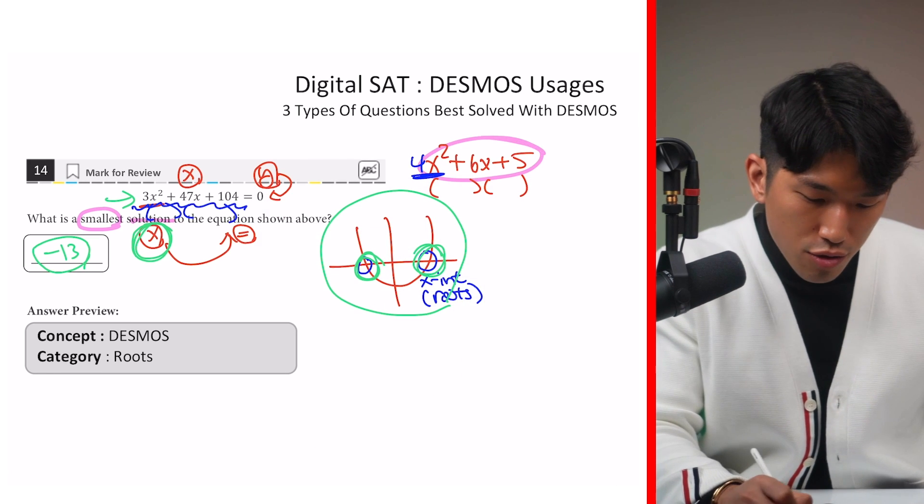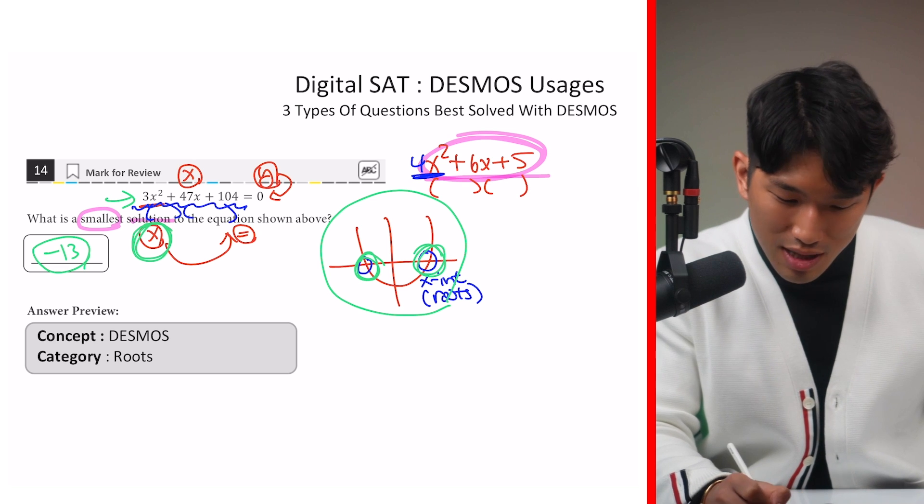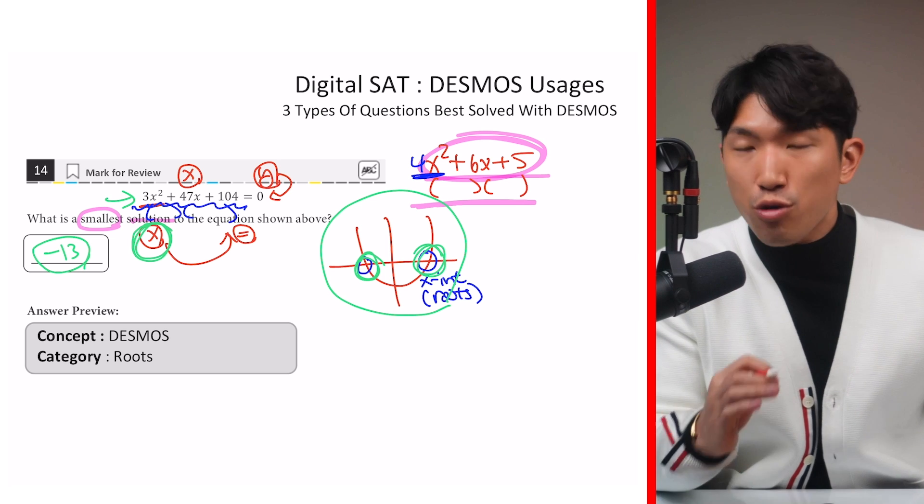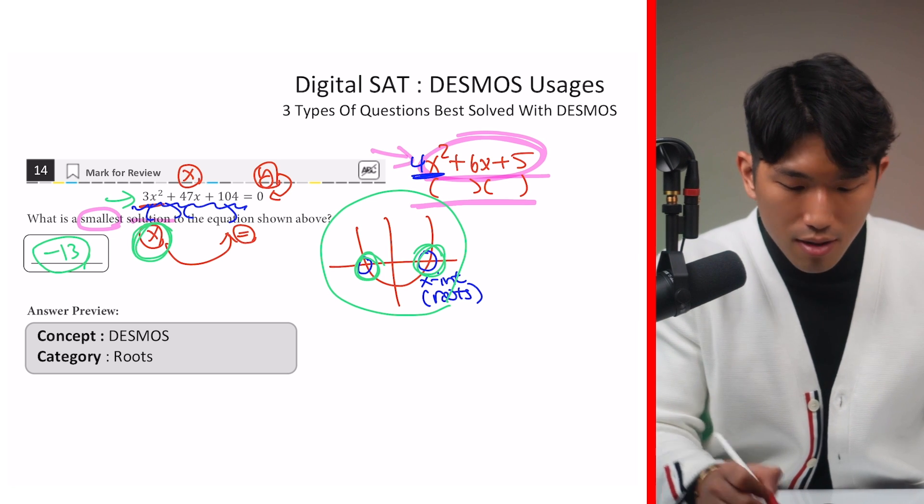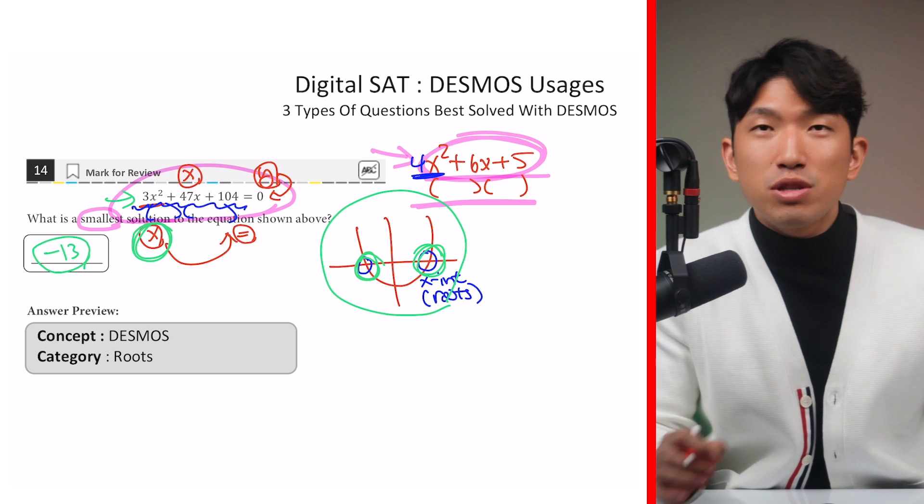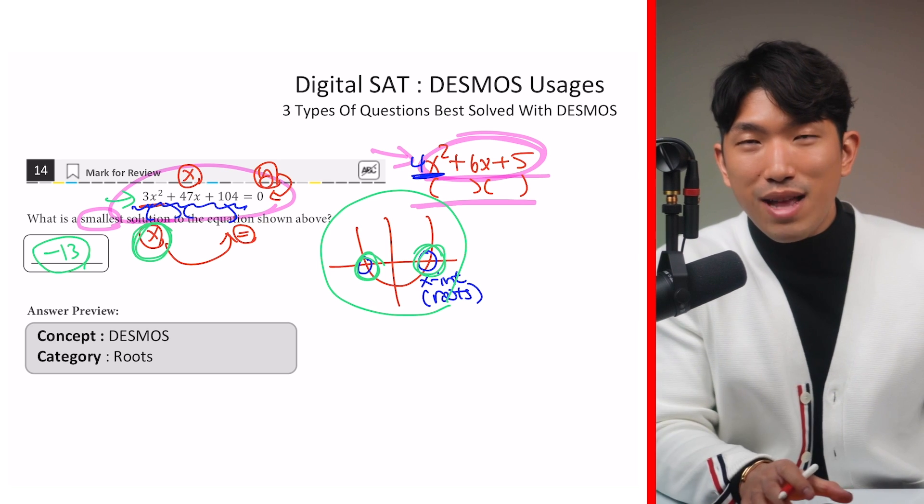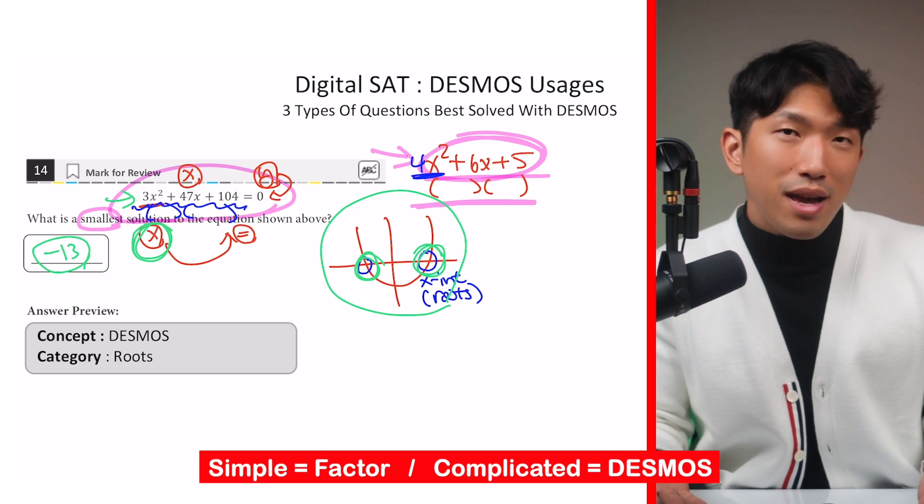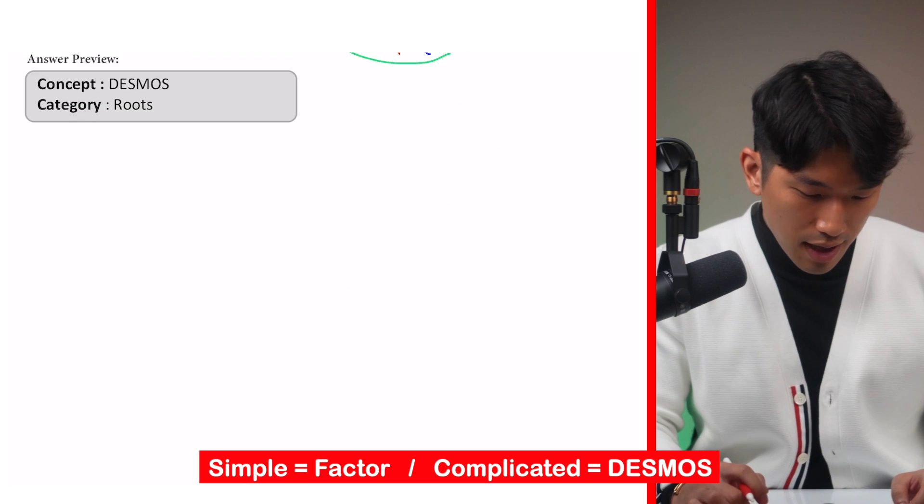So the main takeaway here is that when it comes to a parabola, when the equation is simple like this, you can simply factor it out. You should definitely do that. That will be the faster way. But the moment you have a number attached to x-square or your equation just looks complicated overall, then you simply want to plug it into Desmos, graph it out, and find out where the x-intercepts are located. So simple, factor, complicated, graph it on Desmos.